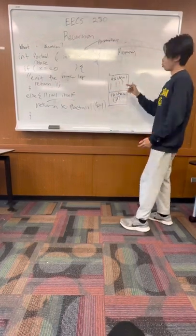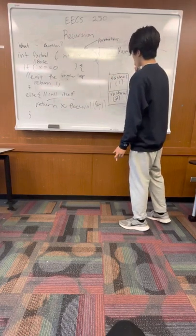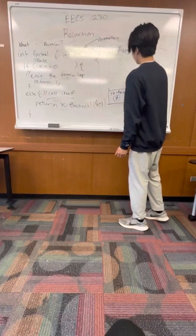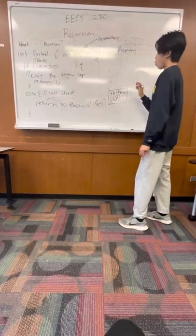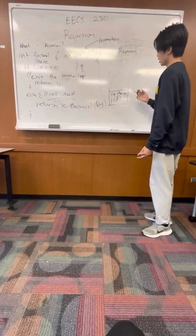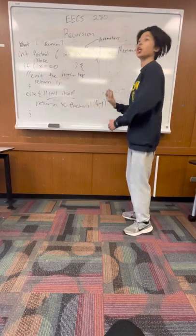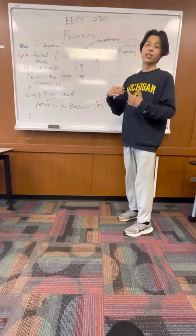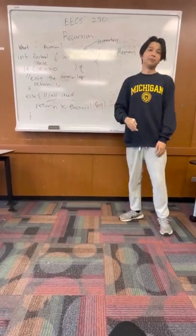So now it returns 1 times what this would give you. Well, 1 times 1 is 1, so this also gets destroyed, and then you have 1 times 2. So 1 times 2 is obviously 2, so this gets destroyed, and then you return 2 if you pass in 2, which is the correct answer. Thank you.